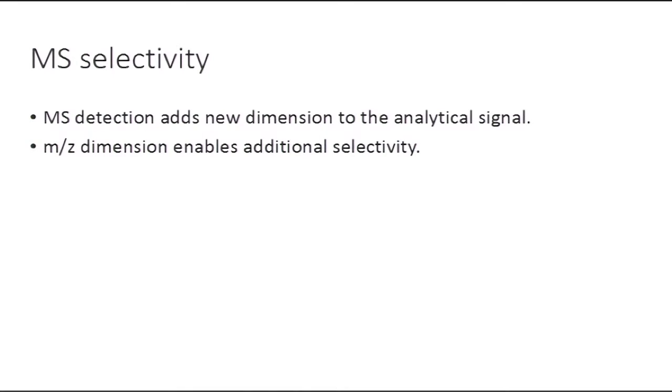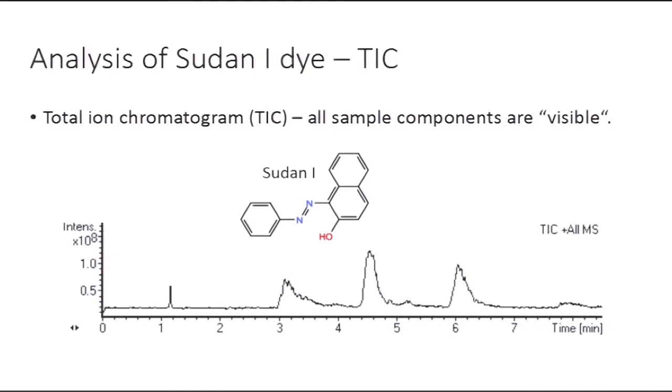Let's demonstrate this on an example of analysis of Sudan dye. Sudan 1 dye is analyzed in a sample, and on the total ion chromatogram, all the peaks of the compounds are visible. We can see three major peaks, one of which belongs to the Sudan 1 dye and two major peaks from unknown compounds.